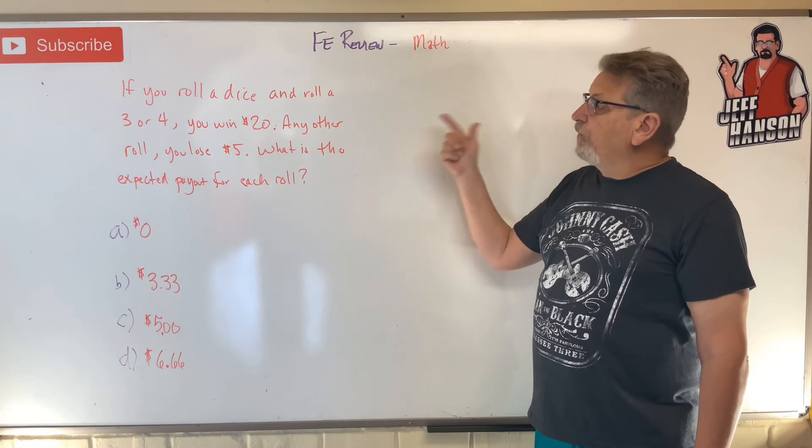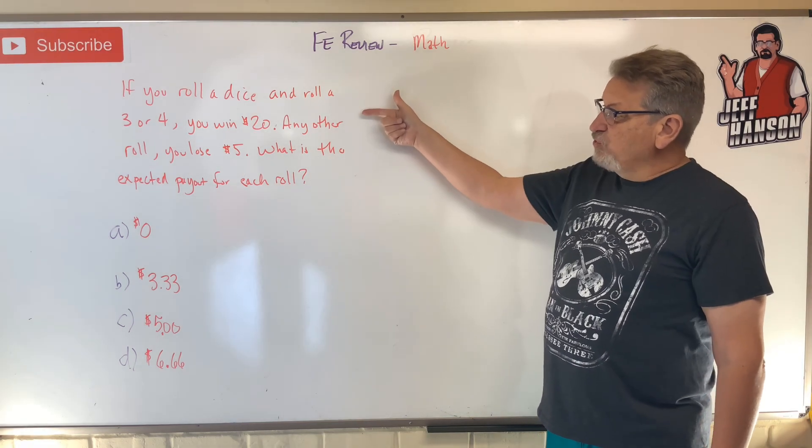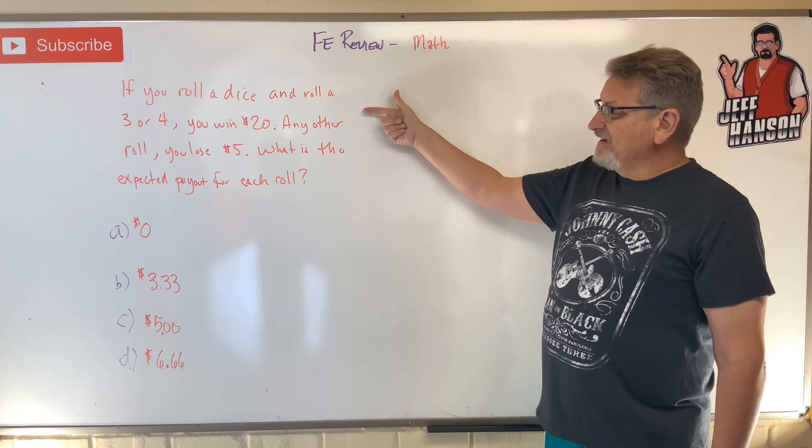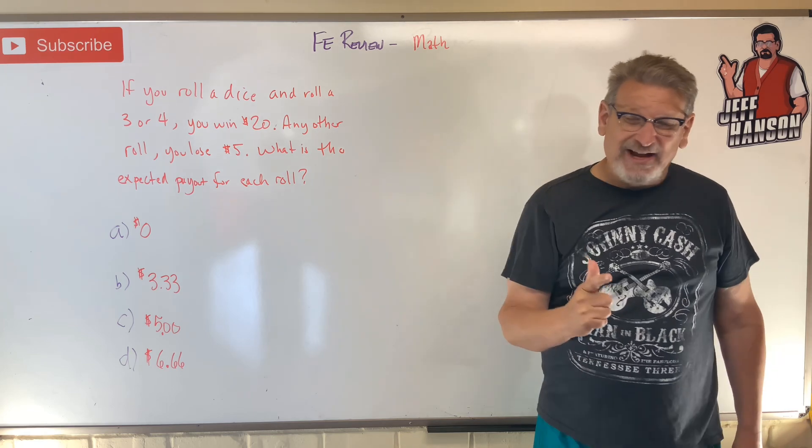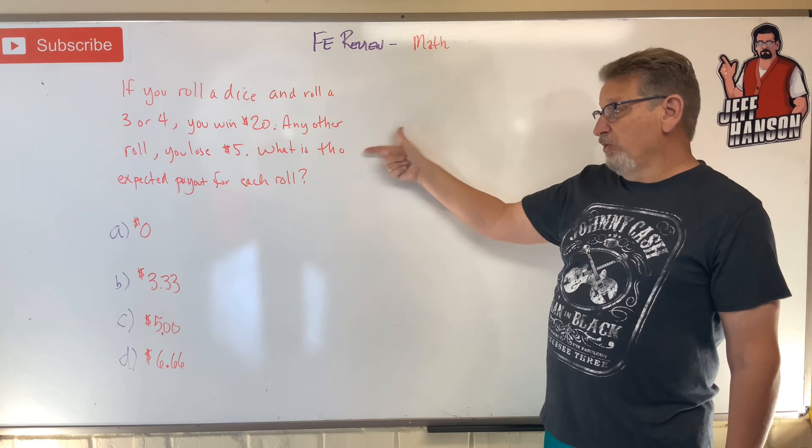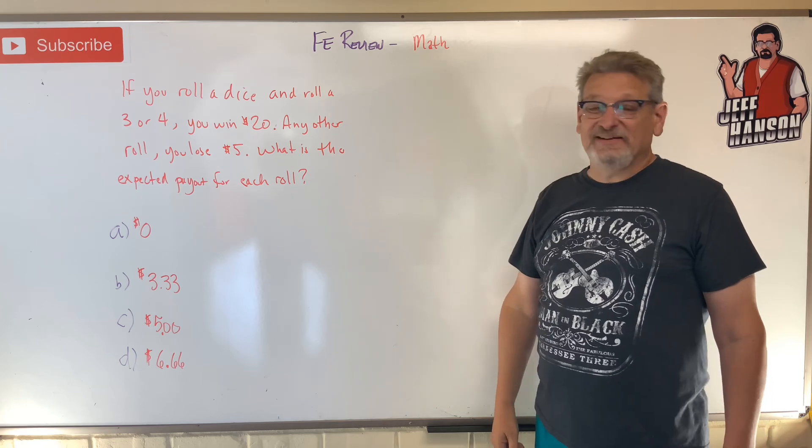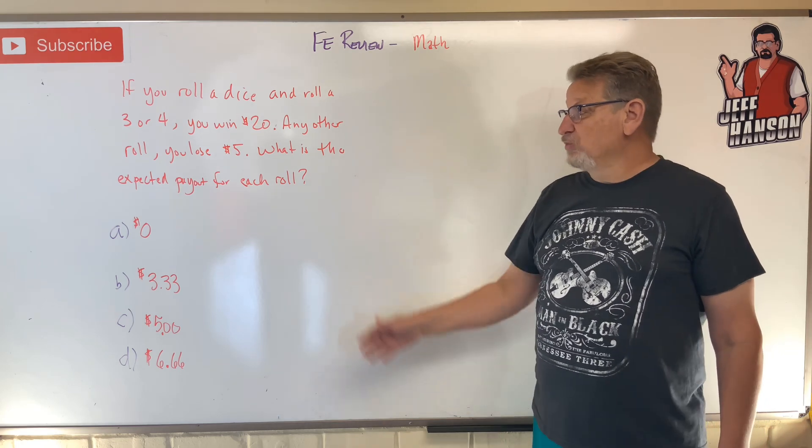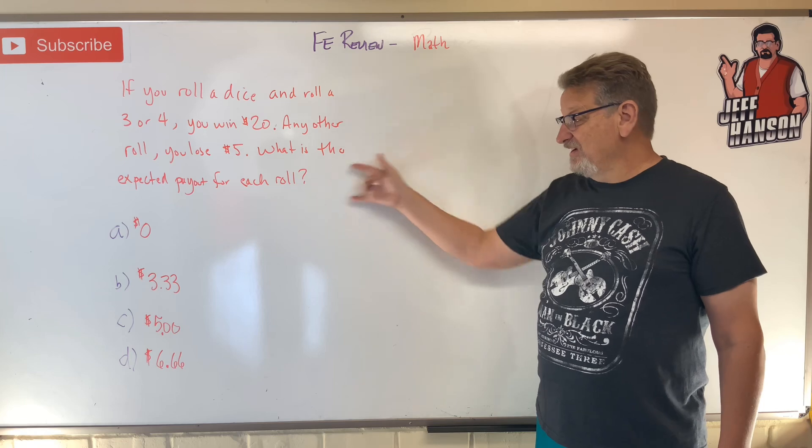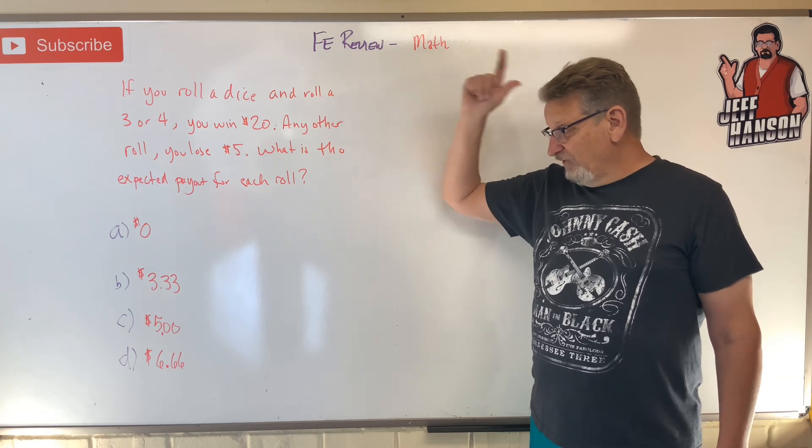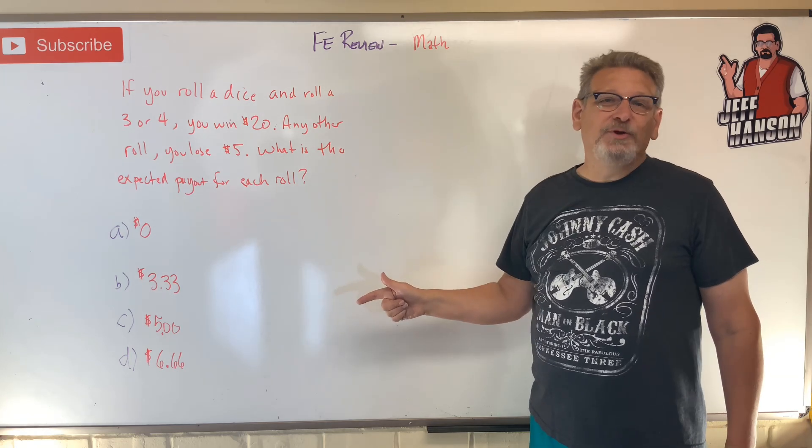Hey gang, welcome back! Every review problem on math: If you roll a dice and roll a three or four, you're going to win $20. Any other roll, you lose $5. What's the expected payout for each roll? This is a statistics question. There's your answer choices. Press pause, work it out. When you come back, I'm going to show you how to do it.